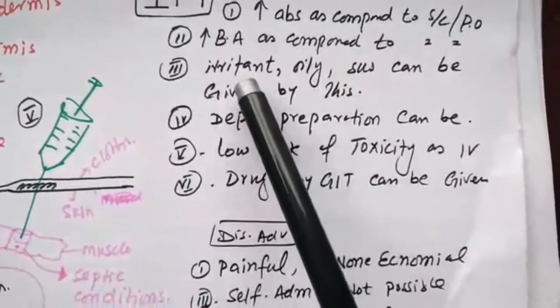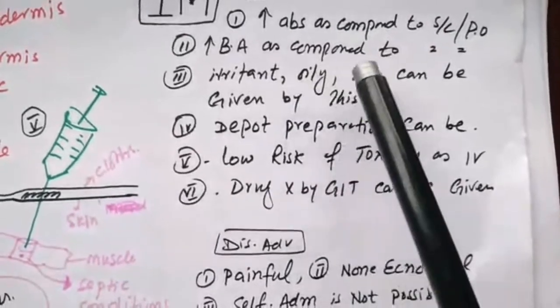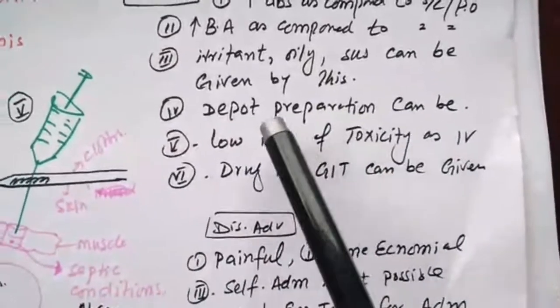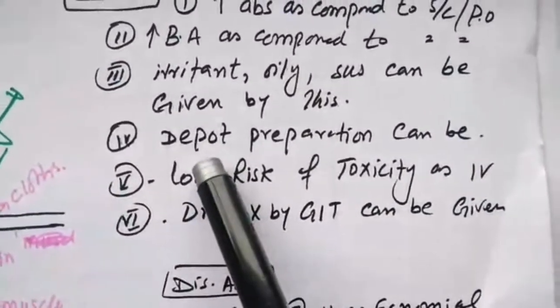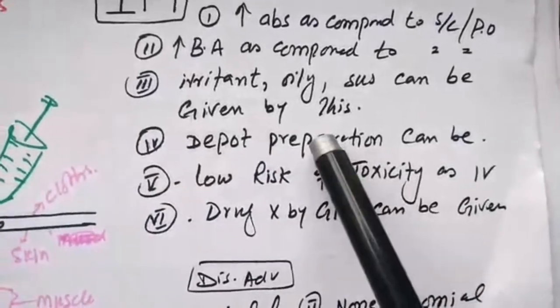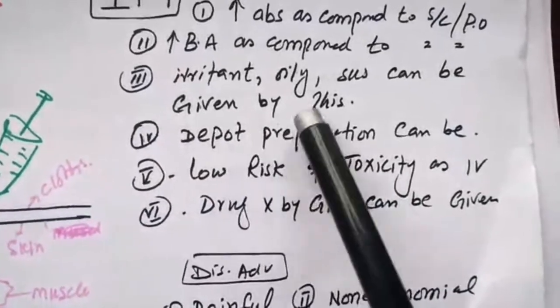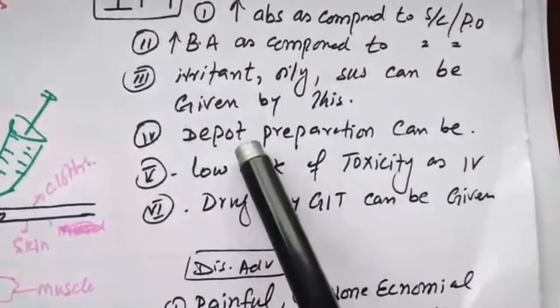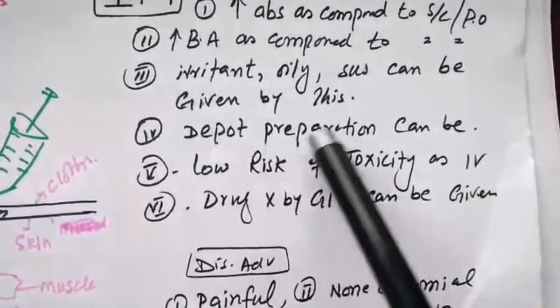If the drug is irritant or oily or suspension, we can give it through this route. Depot preparation or sustained release preparation - they are slowly releasing from the muscle into the vein, meaning their absorption is slow. This absorption may prolong up to one month.